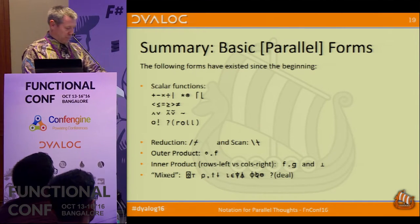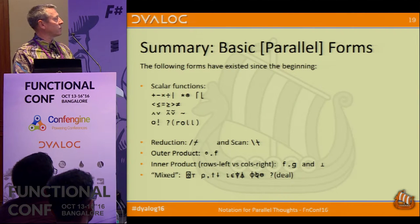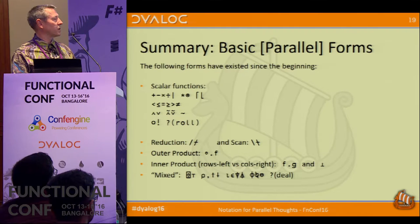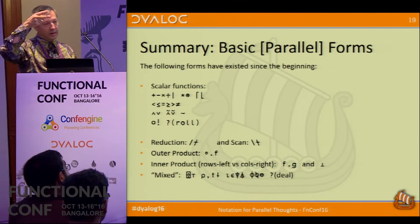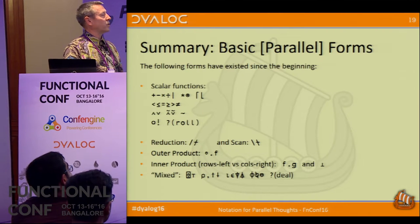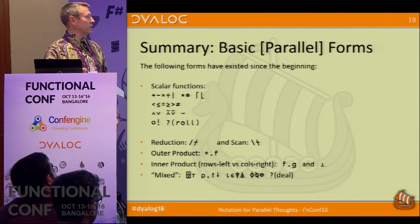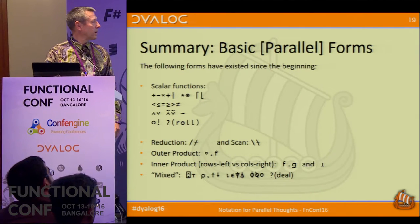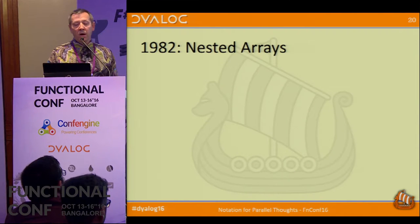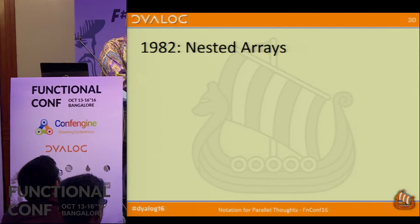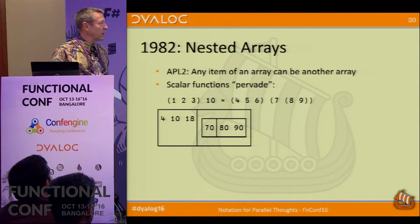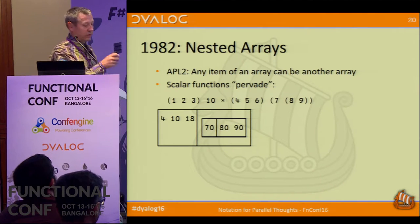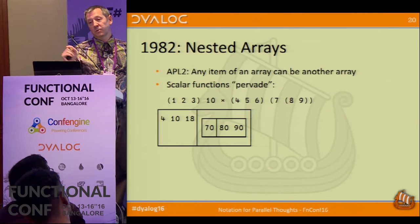So to summarize the basic parallel forms, we have all these scalar functions, including the circle function which does trigonometrics. We have reductions and scans, outer product, inner product, and this base value that I used in the demo where I was interpreting the columns of a matrix in a specified user-defined base. And then we have a bunch of mixed functions. We haven't looked at all of these. There's matrix inversion or matrix division. And we've looked at most of the others. Okay. So then in 1982, which is a while ago now, APL transitioned. There was a major extension of APL where we switched from having arrays which were strictly rectangular and all items of the same type to allowing any item of an array to be another array.